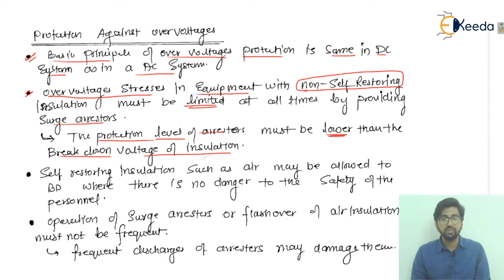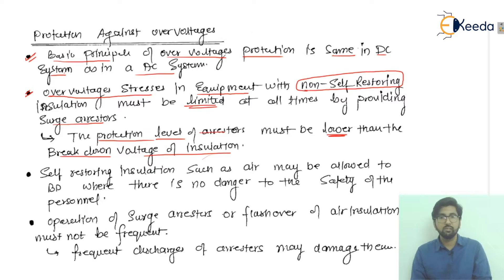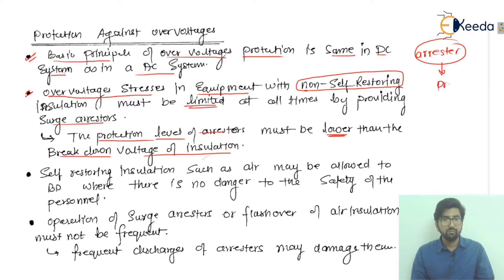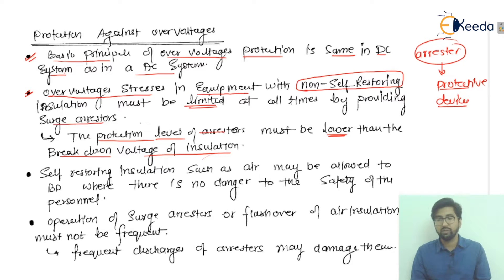Insulation always has a breakdown strength. If we are selecting arrestors — the arrestor is a kind of protective device — the protection level of the arrestor, in terms of insulation coordination, must be considered carefully.